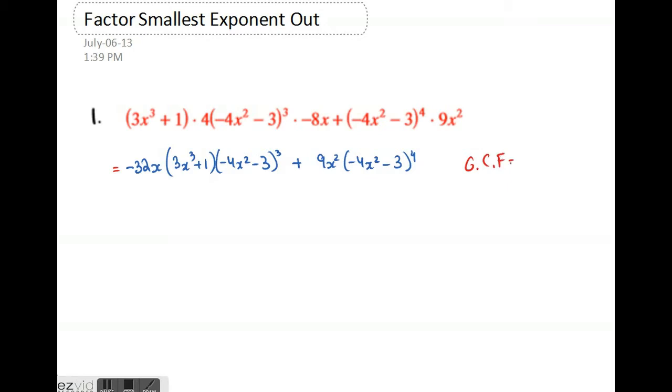Notice how both of them have x's and both have the same bracket. What you're going to do is pull out the smaller exponent, so the smaller exponent between x's is just x and the smaller exponent between the brackets is the power of 3.